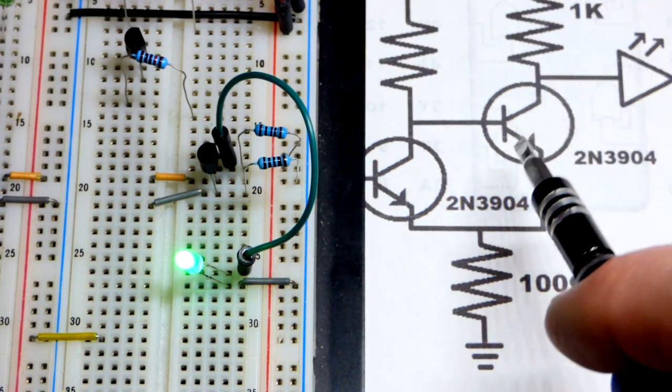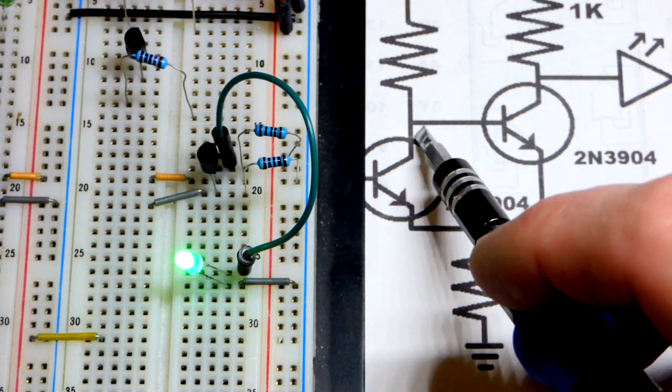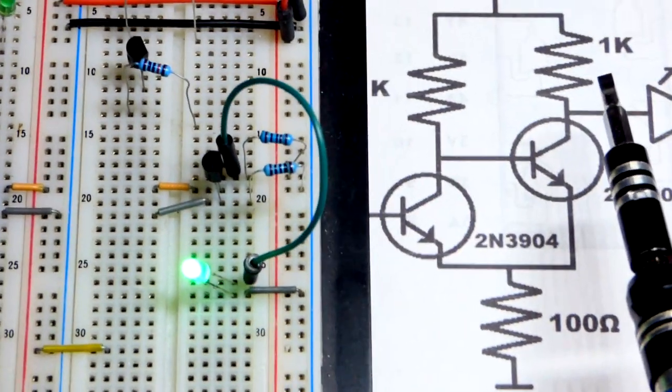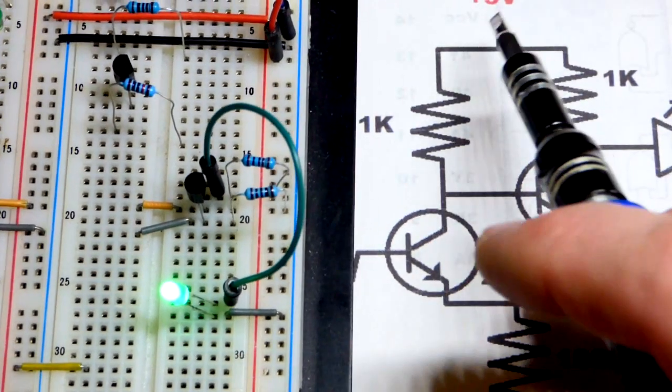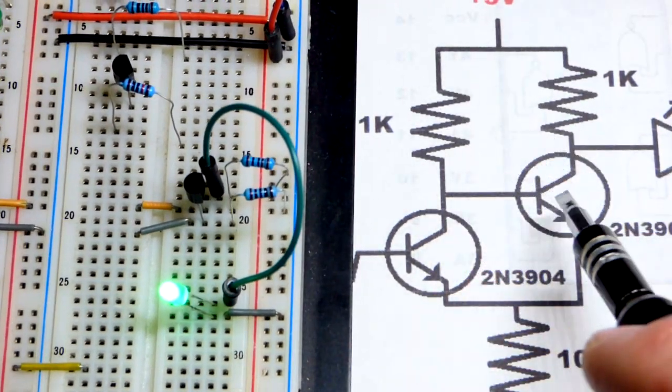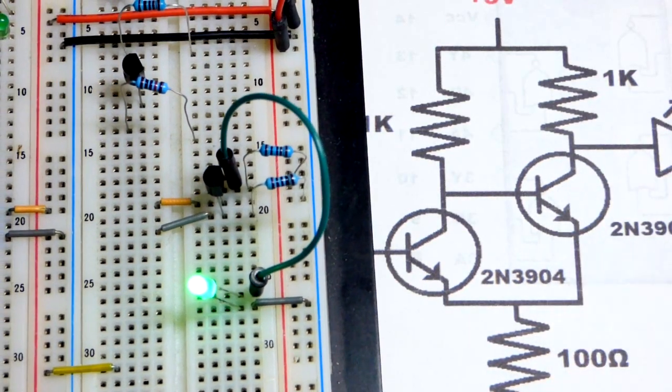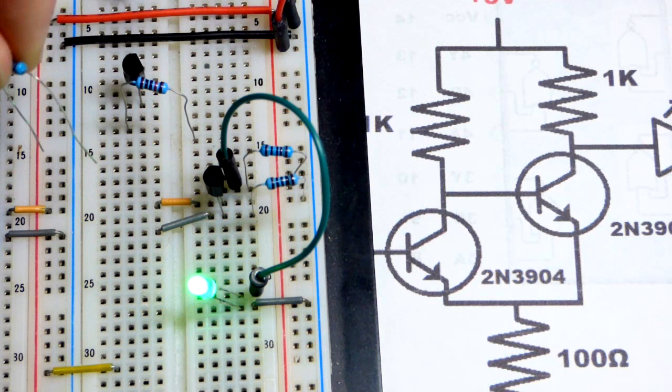We come to the other transistor right here. When this transistor is off we will have the resistor here that will turn that transistor on and the LED off, it'll take away that power.